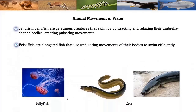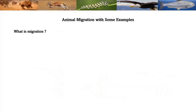Jellyfish are gelatinous creatures that swim by contracting and relaxing their umbrella-shaped bodies, creating pulsating movements. Eels are elongated fish that use undulating movements of their body to swim efficiently.